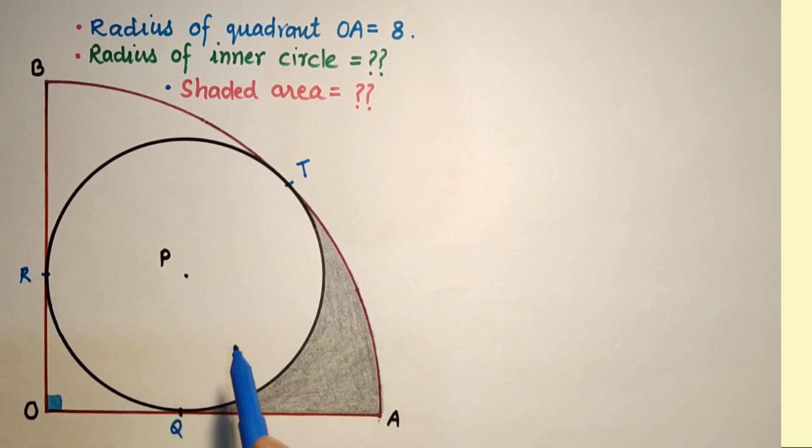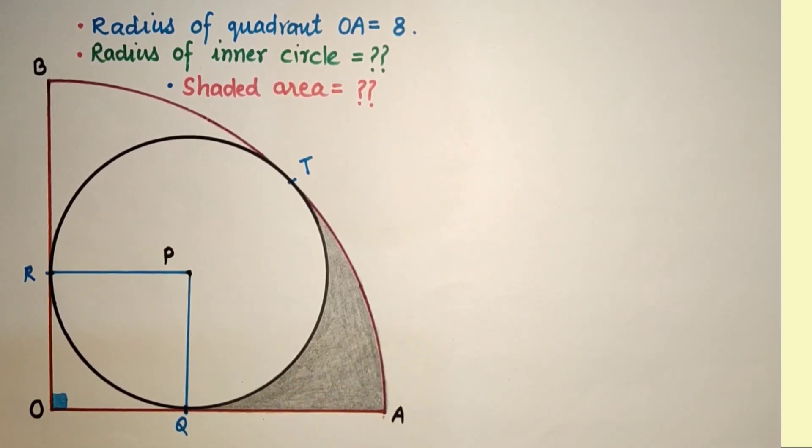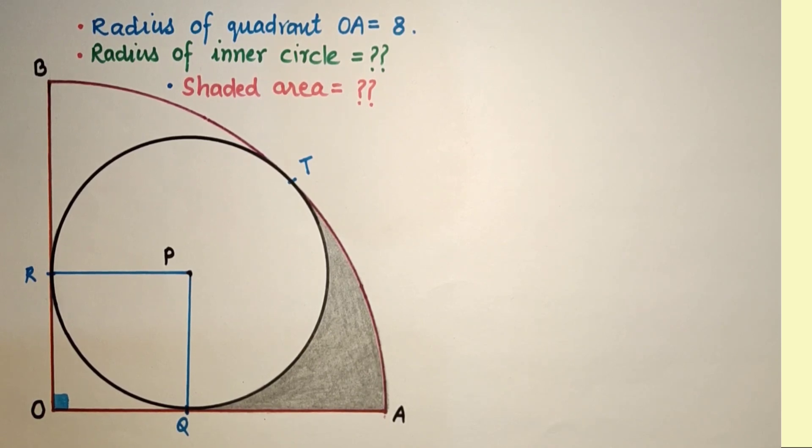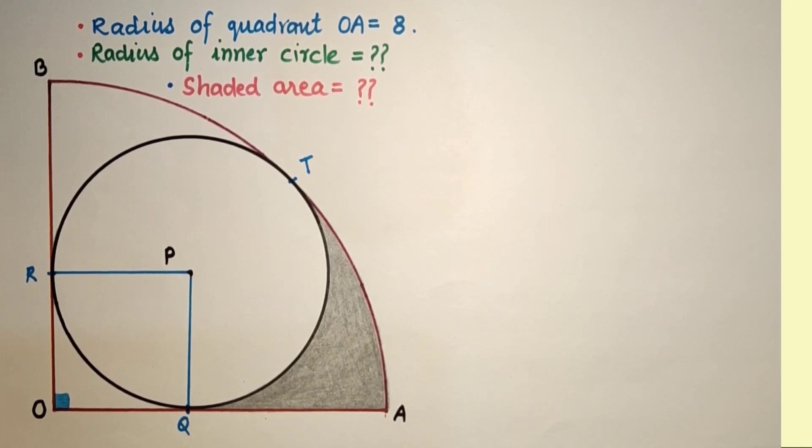Join RP and PQ. As we know, if two circles touch each other externally or internally, the point of contact and their centers will be in a straight line. So these points, centers, and point of contact will be collinear.